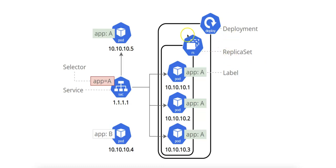The deployment object in the top right manages the lifecycle of your application and ensures that a specified number of pods are running. It's responsible for creating a replica set and ensuring that the number of pods specified by the deployment is available. A replica set ensures that a certain number of pod replicas — in this case for the app-a pods — are running at any given time.